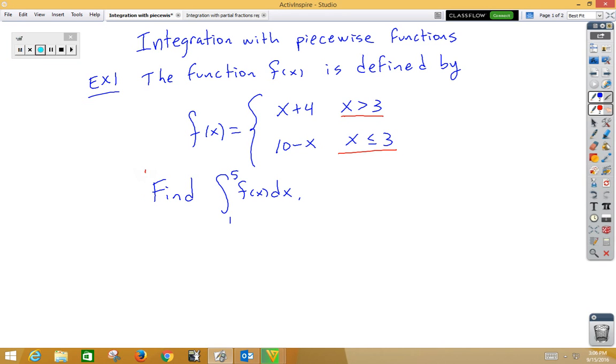We're trying to find the integral from 1 to 5 of f of x. The bottom function would work from 1 to 3, so we start off by integrating 1 to 3 of the bottom function.